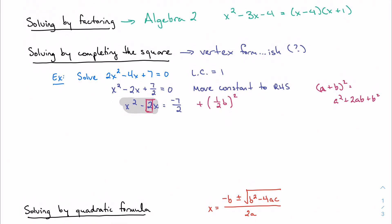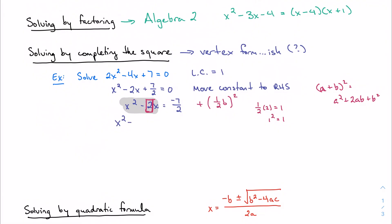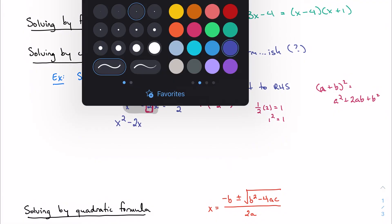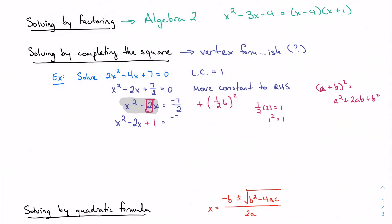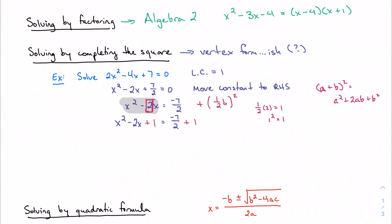I just realized I misspoke a little bit earlier. We're taking the coefficient, not necessarily just the sign. So I want half of that. Half of 2 is 1, and 1 squared is 1. So I'm going to add 1 to both sides, because whatever I do over here, I need to also do over here.